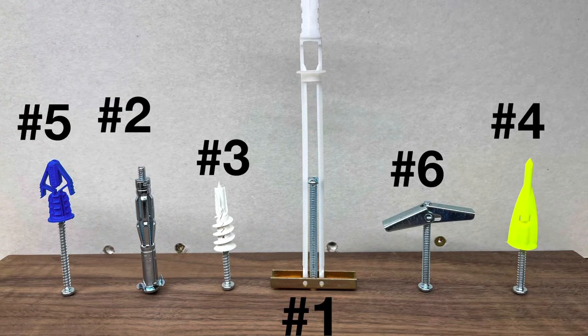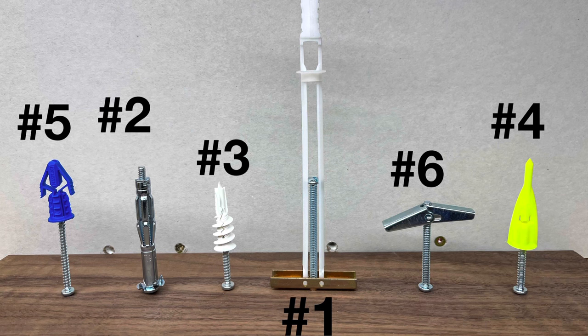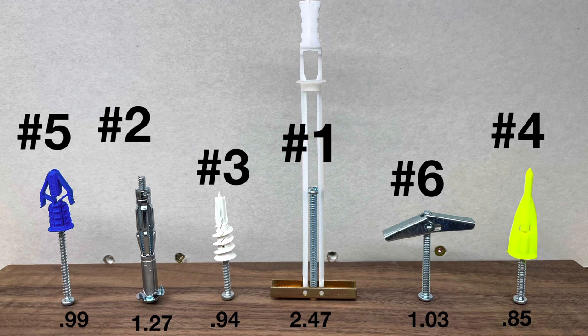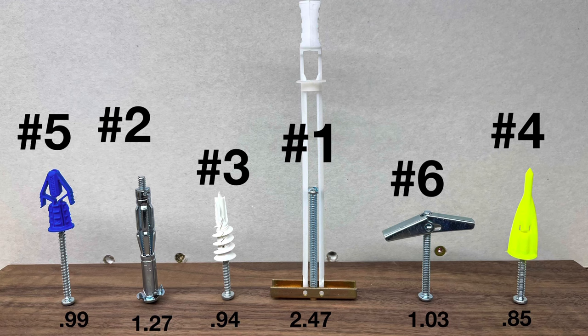So here are the results based on overall strength only. The important number from the test is when the anchor began to fail, not the final blowout. No one wants a sagging shelf. As soon as it starts to let go, it's useless. And here is the ranking with the cost per anchor. The toggler was the strongest but left quite a big hole behind and cost double what the hollow wall anchor does in number two.